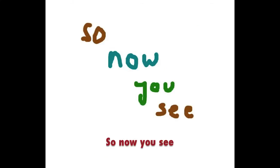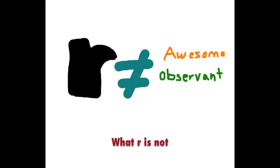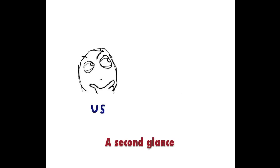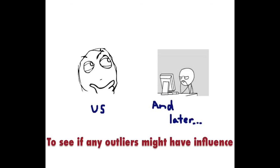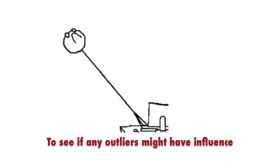So now you see what R is not. It doesn't worry about explanatory or response. It needs our help, a second glance, to see if any outliers might have influence.